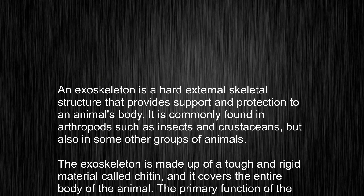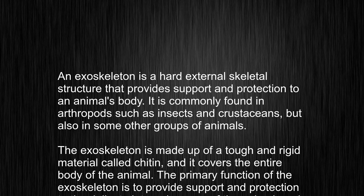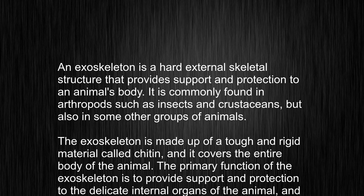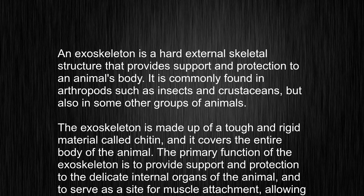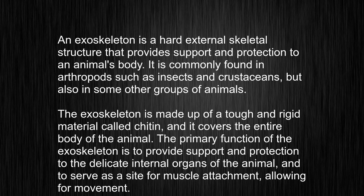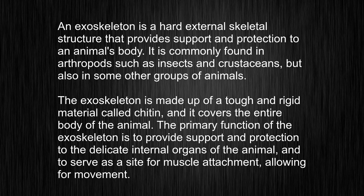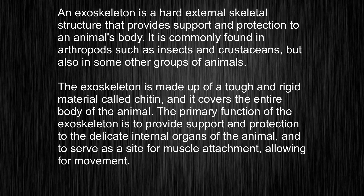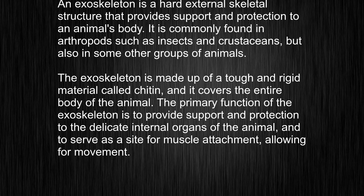An exoskeleton is a hard external skeletal structure that provides support and protection to an animal's body. It is commonly found in arthropods such as insects and crustaceans, but also in some other groups of animals. The exoskeleton is made up of a tough and rigid material called chitin, and it covers the entire body of the animal.